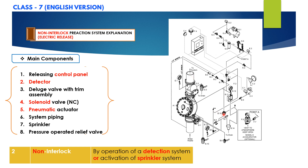Apart from these components, there are various other components like air compressors, check valves, strainers, butterfly valves, pressure gauges, emergency pull release stations, pressure switches, and alarm bells. All these are required for proper functioning of the system.